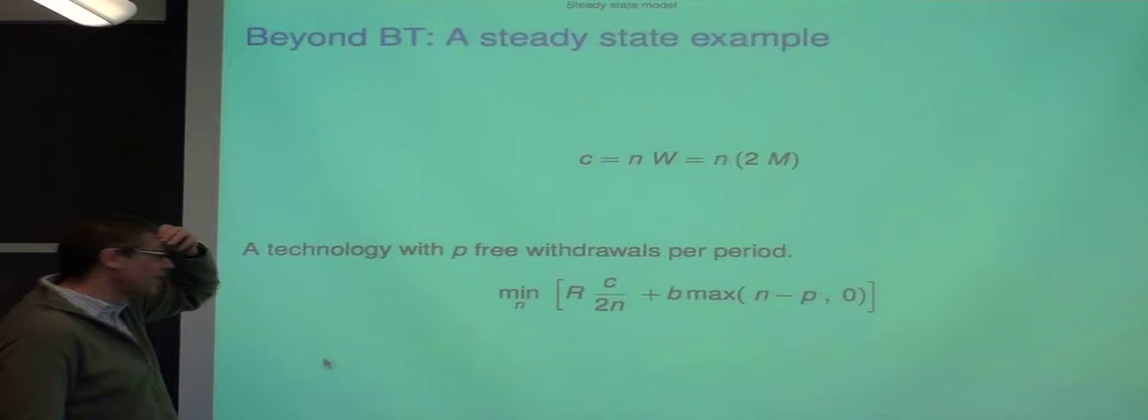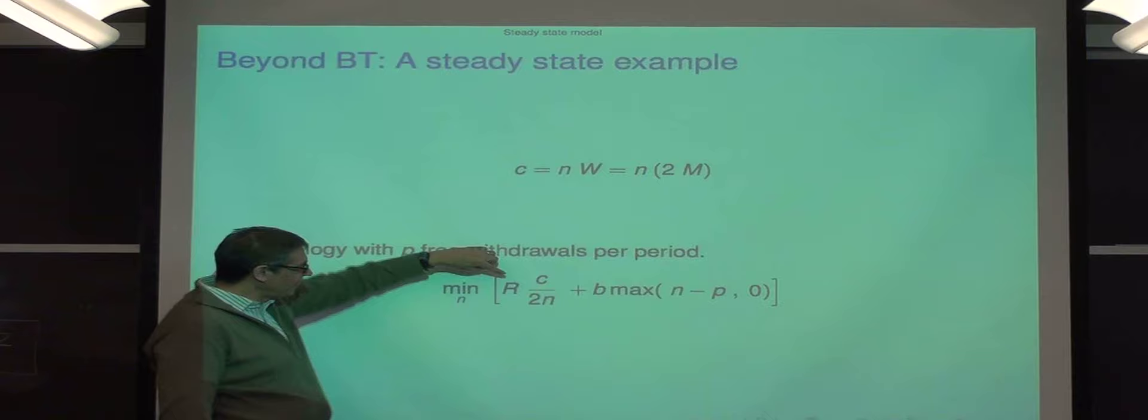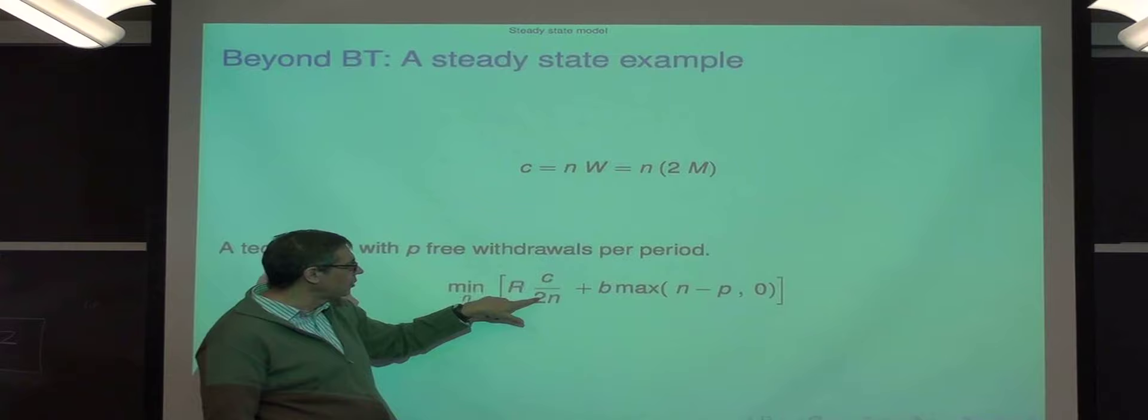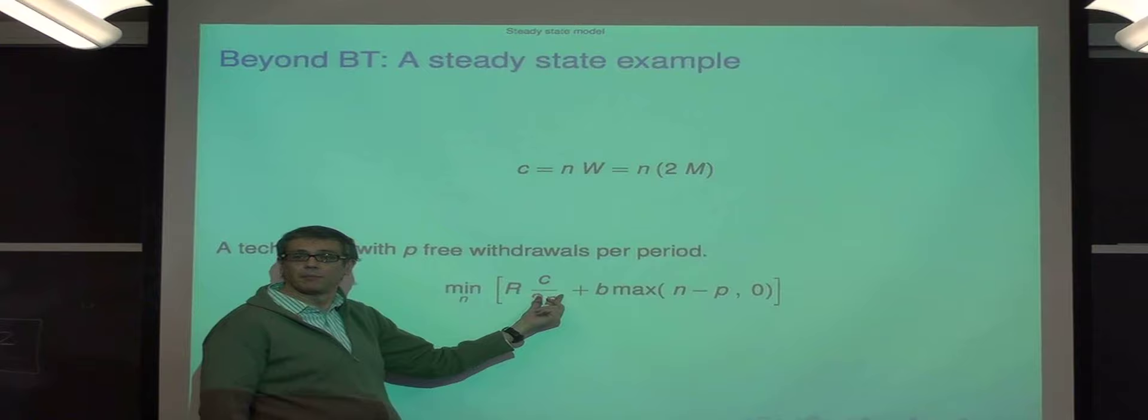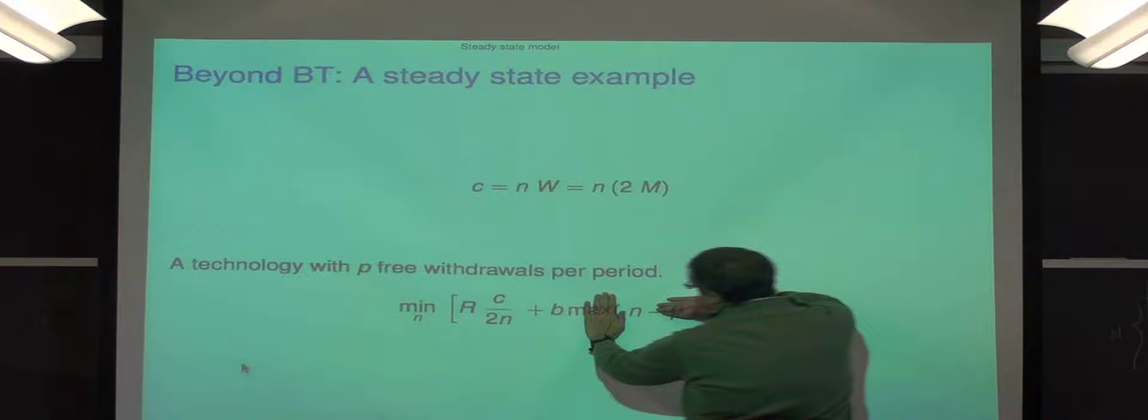So let me show you the model. The model is very simple. You minimize an opportunity cost of having cash times the average cash balances, which now can be written as C over 2N from here. So if you draw very often, that means that you have very little cash on average, times the cost of each of the withdrawals.